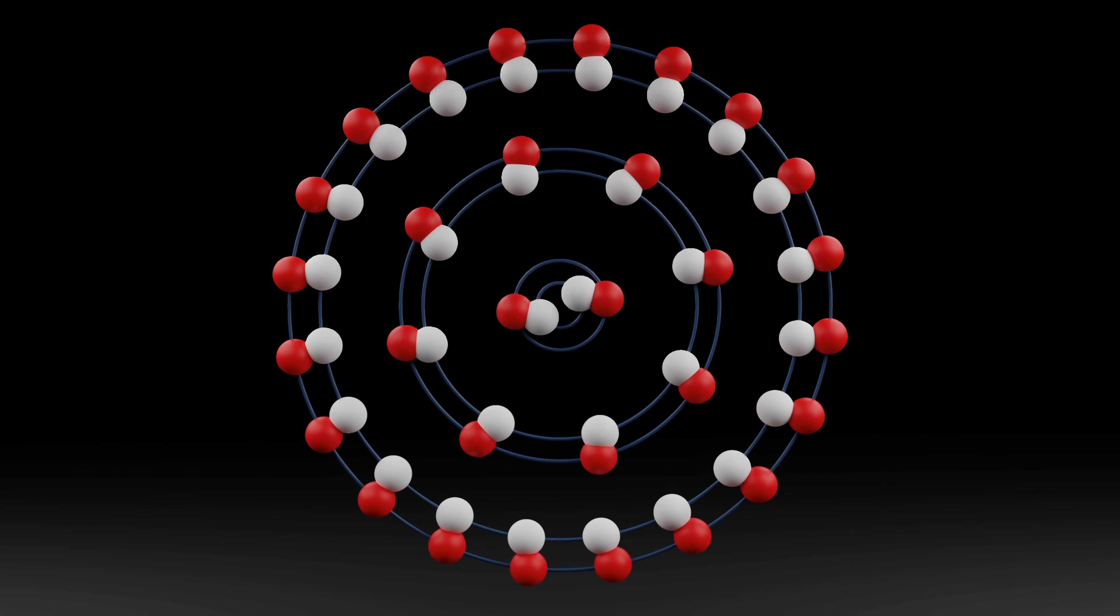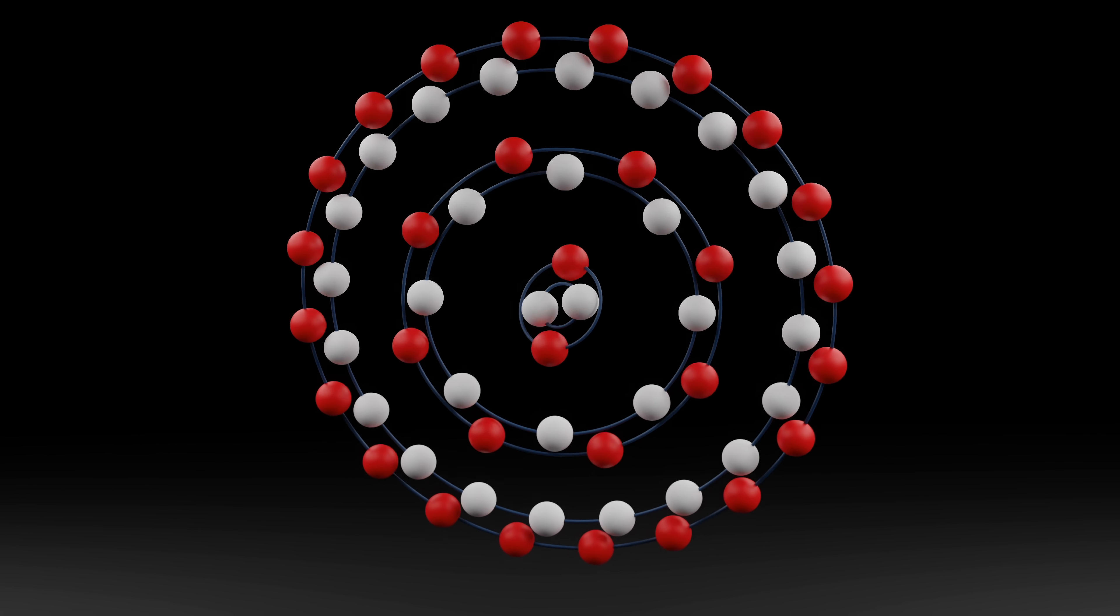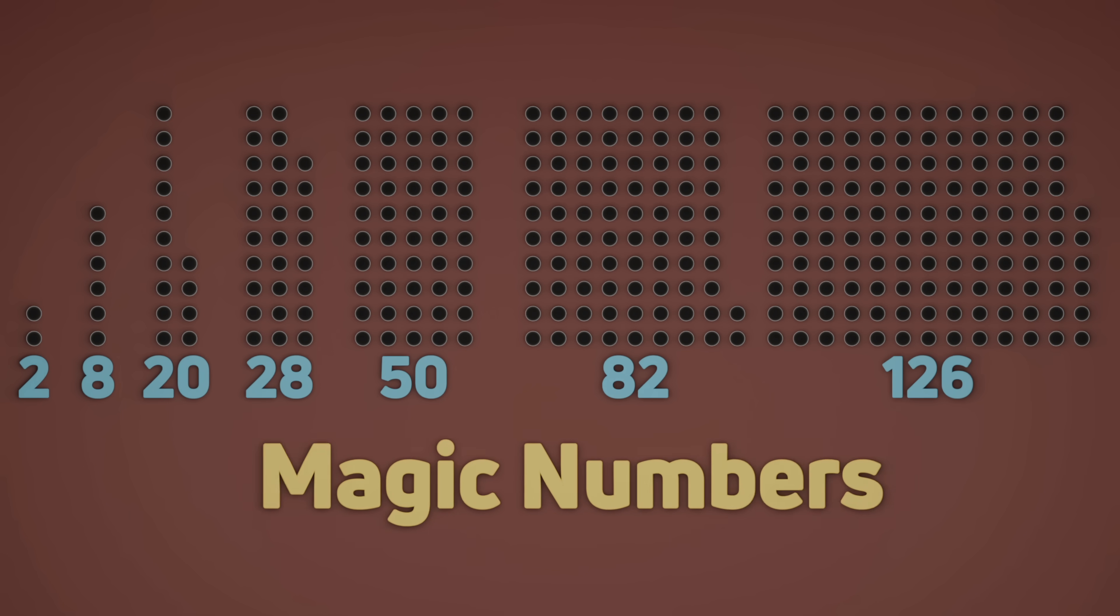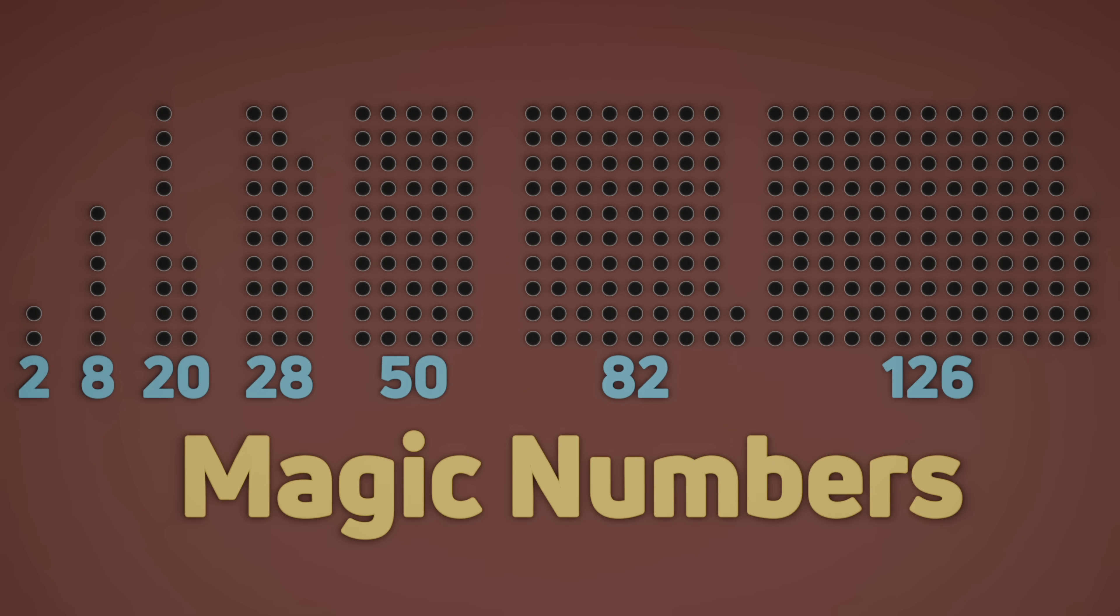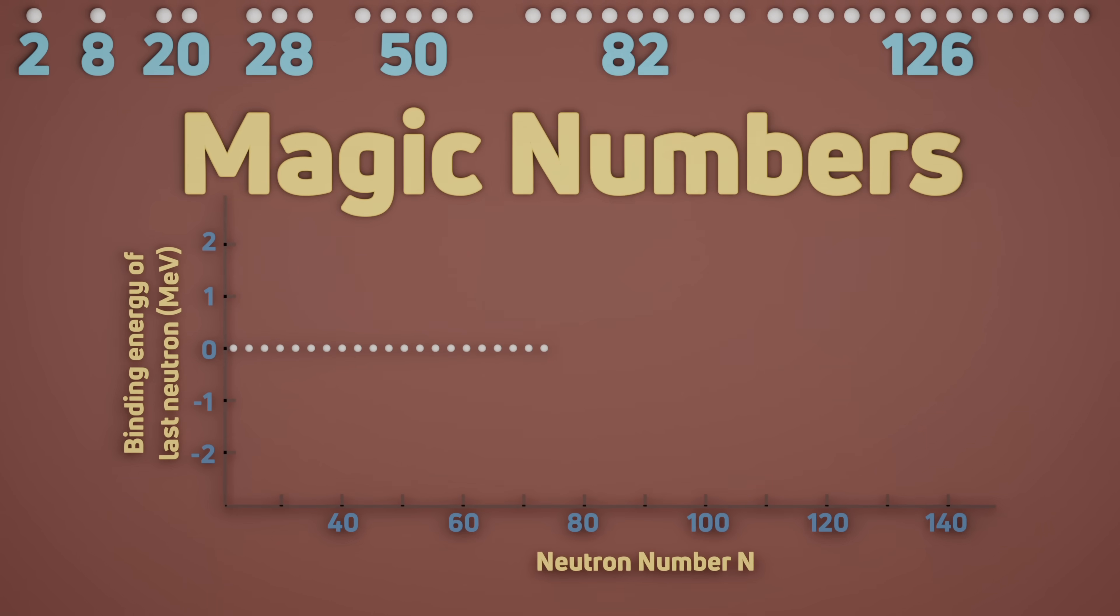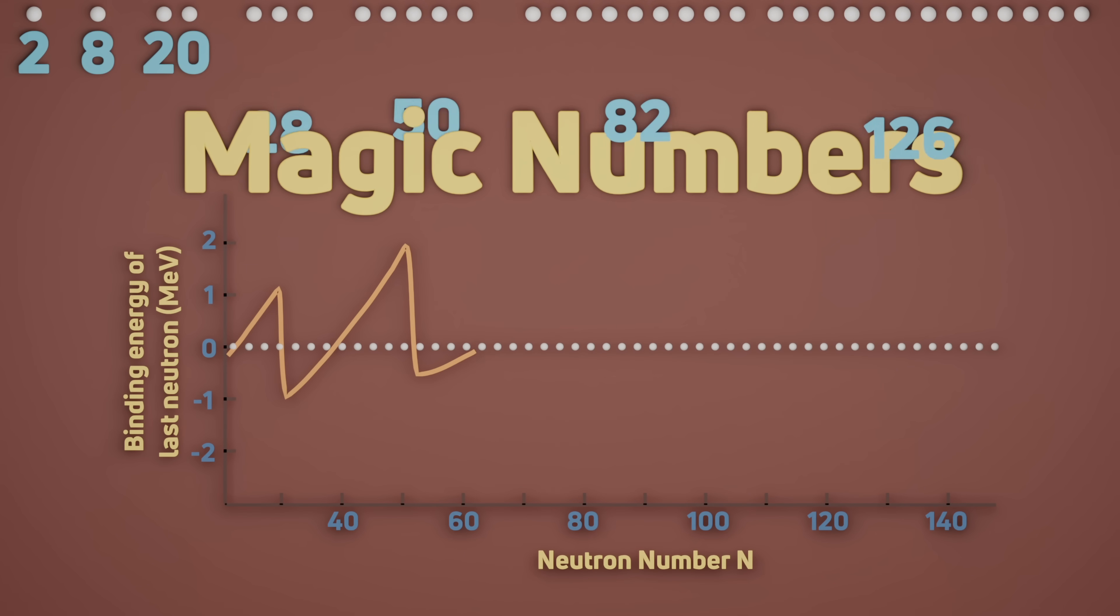Nucleons also adhere to this shell filling. However, the numbers required to fill their shells differ, and that sequence of numbers is seen here. These are referred to as magic numbers, and they represent local maxima of stability. Adding an extra neutron or nucleon to a filled shell will cause a disproportionate drop in average binding energy per nucleon.